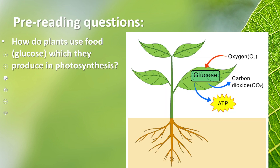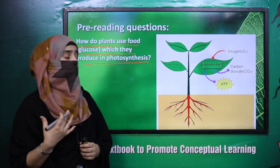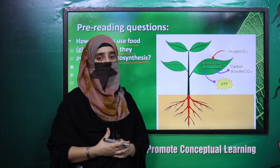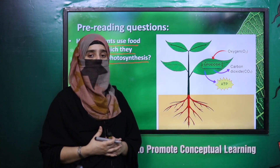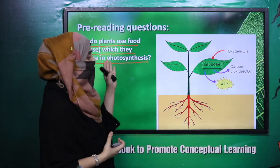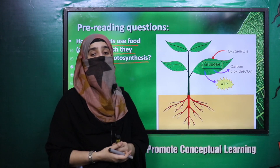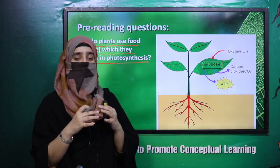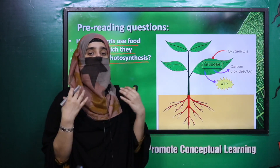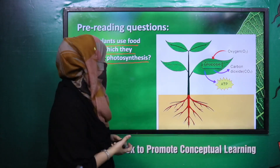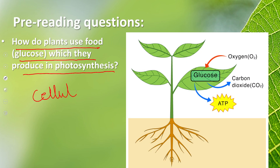My dear students, quickly answer this question: How do plants use the food glucose which they produce in photosynthesis — the food-making process in plants? How do plants use that glucose? Good — mitochondria help the sugar molecules break down into smaller molecules to release energy. This process is called cellular respiration.